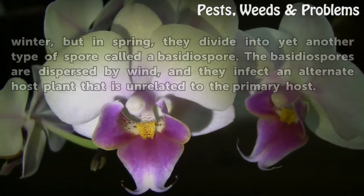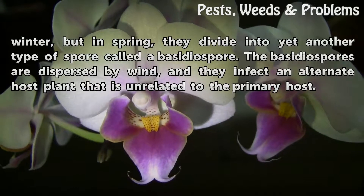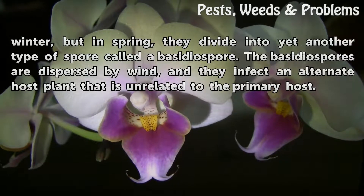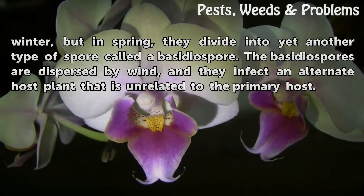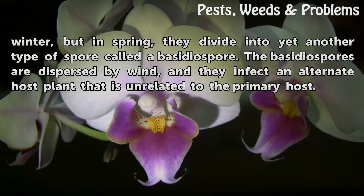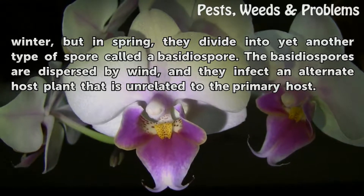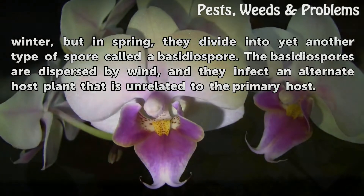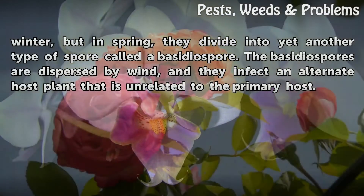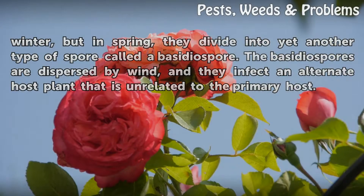Telium spores stay in the host through winter, but in spring they divide into yet another type of spore called a basidium spore. The basidium spores are dispersed by wind, and they infect an alternate host plant that is unrelated to the primary host.